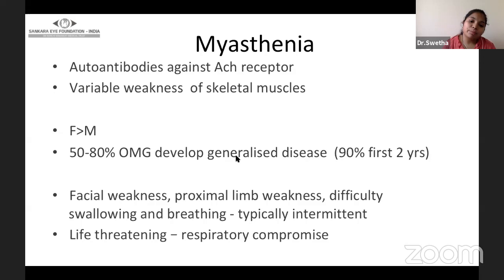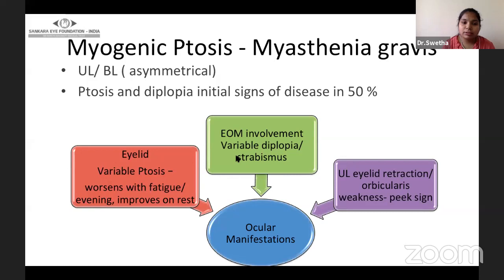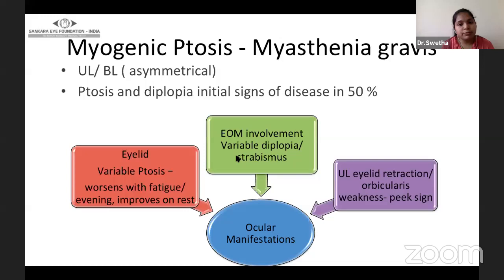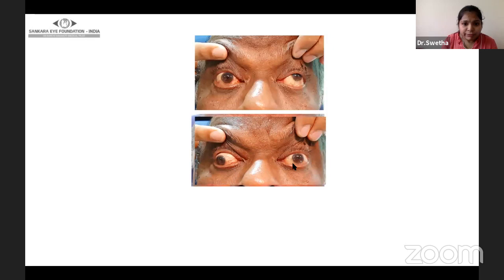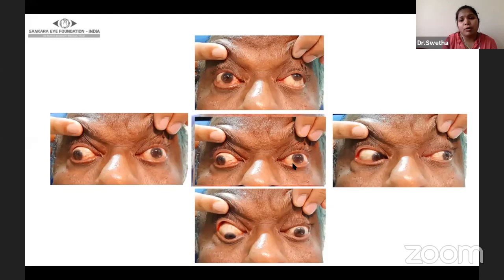If there is any respiratory compromise in myasthenia patients, it is a life-threatening condition. Generally, patients have bilateral asymmetrical presentation, and ptosis and diplopia can be the initial sign in 50% of patients. If the levator muscle is involved, it gives rise to variable ptosis that worsens with fatigue and in the evening and improves with rest. If extraocular muscles are involved, it gives variable diplopia and strabismus. If orbicularis is involved, the patient may present with eyelid retraction and orbicularis weakness with a peek sign. Here you can see bilateral ptosis with strabismus and almost limited extraocular movement.